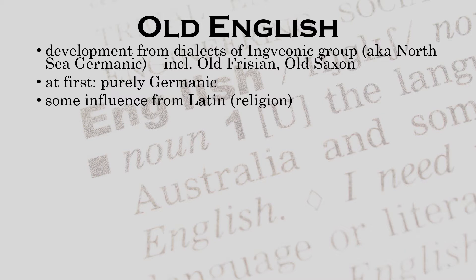Influence from Latin did start pretty early, from what remained of Roman influence, and more importantly through religion. Christianity had arrived in England as early as the end of the sixth century. That developing language, which we now call Old English, is hard to recognize as English for us, but it was the basis of what eventually developed into our contemporary English.